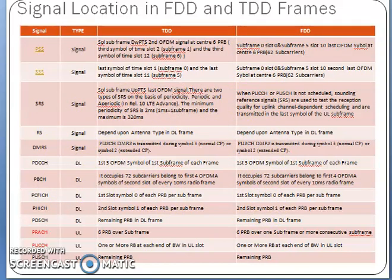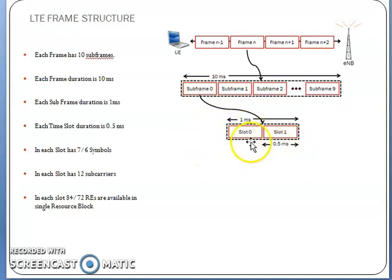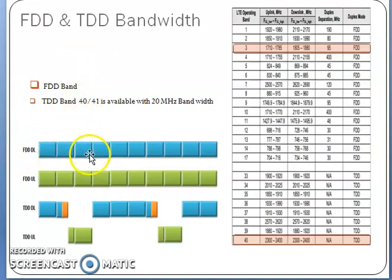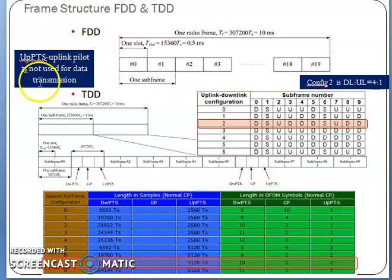To recap: LTE frame = 10 milliseconds, divided into 10 subframes. One subframe = 1 millisecond, divided into 2 slots of 0.5 milliseconds each. One slot has 12 subcarriers and 84 resource elements (normal CP) or 72 resource elements (extended CP). In FDD, separate frequencies are used for uplink and downlink. In TDD, the same frequency is used for both. Band 3 is for FDD; bands 40 and 41 are for TDD.